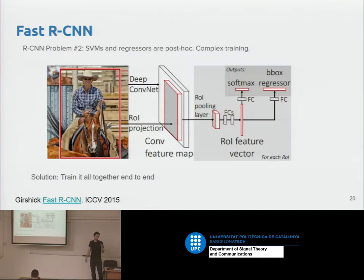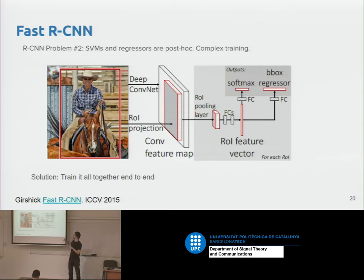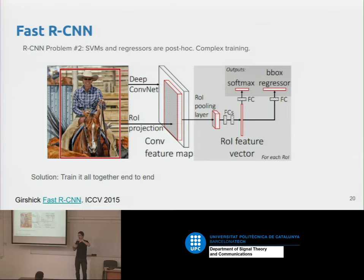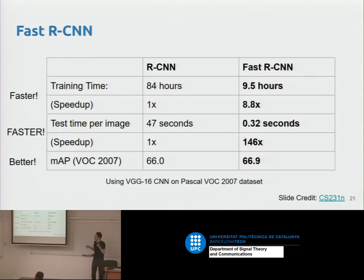The second problem — the SVM preventing backpropagation — was solved by adding a softmax layer that assigns probabilities and can be trained end-to-end, plus a bounding box regressor that adapts the object proposals to actually fit the object. With these two modifications they went from RCNN to Fast RCNN, which is faster.